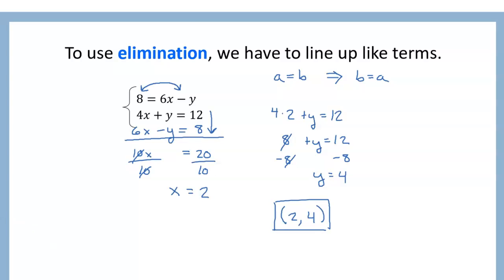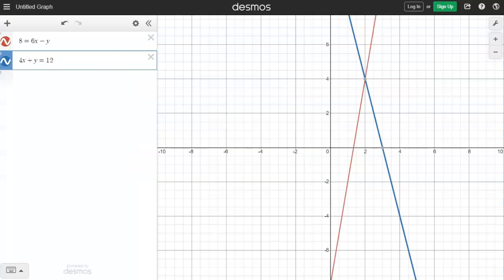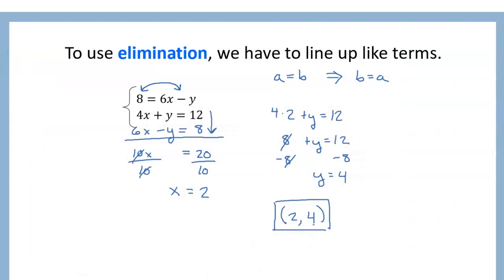We can check this in Desmos. Any method we use to solve a system of equations should get the same answer — substitution, elimination, Desmos. Here we are in Desmos with the equations typed in exactly as they were originally. And you can see 2, 4 is indeed the intersection point. So we've verified that is the correct answer using two different methods.